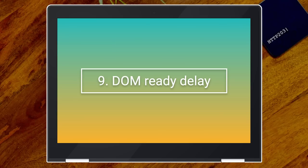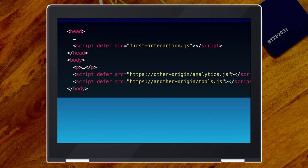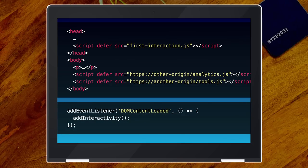Number nine is DOM ready delay. This is one I didn't expect to come up, but it appeared on a couple of sites. It's a real gotcha. You've got your main script in the head with `defer` so it doesn't block rendering — great. And at the bottom of the body, you've got less important scripts also using `defer`, so there's no render blocking. It all looks good on the surface, but in the first script it listens to `DOMContentLoaded`, or some jQuery ready function that uses it under the hood, which will wait for all other deferred scripts to download and execute.